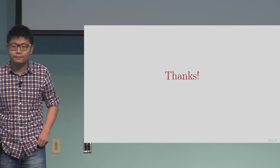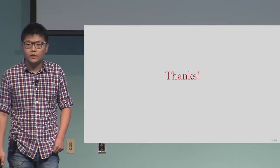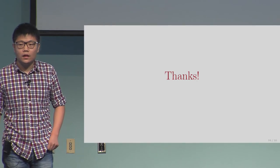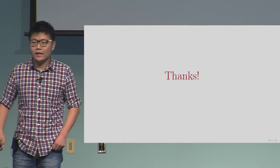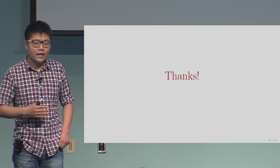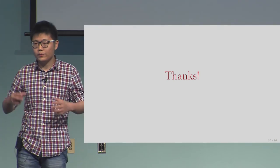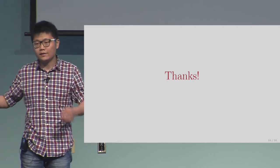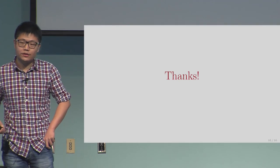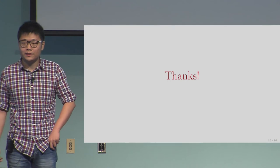Question: You said that there was a previous result that supported log locality — I think one of the authors was Faust — and it was efficient. Can you explain again what is the difference with your result? Answer: They show a probabilistic construction — with probability one, their probabilistic construction will be secure against that tampering family. However, we cannot de-randomize such Monte Carlo constructions, so it's not an explicit construction.